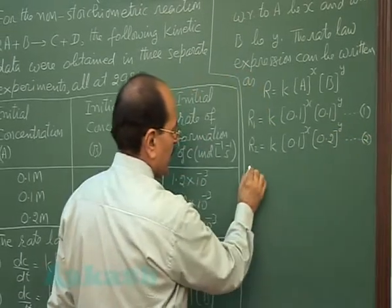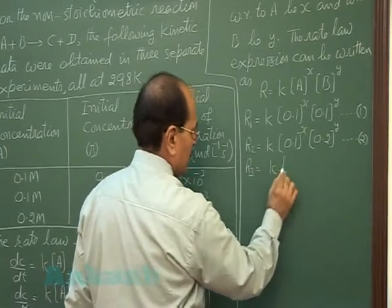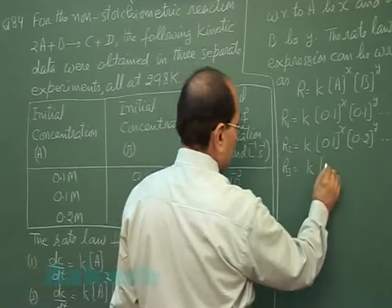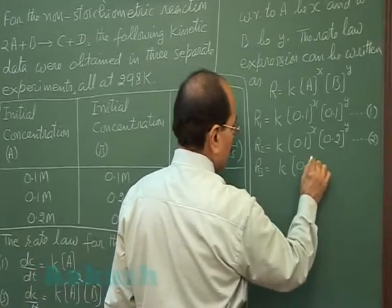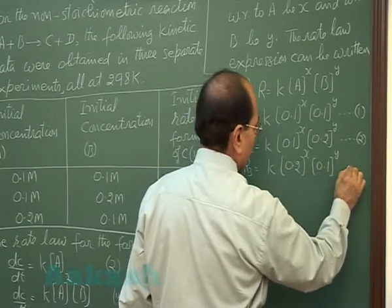And similarly, for the third experiment, R3 is given by 0.2 raised to the power x into 0.1 raised to the power y.